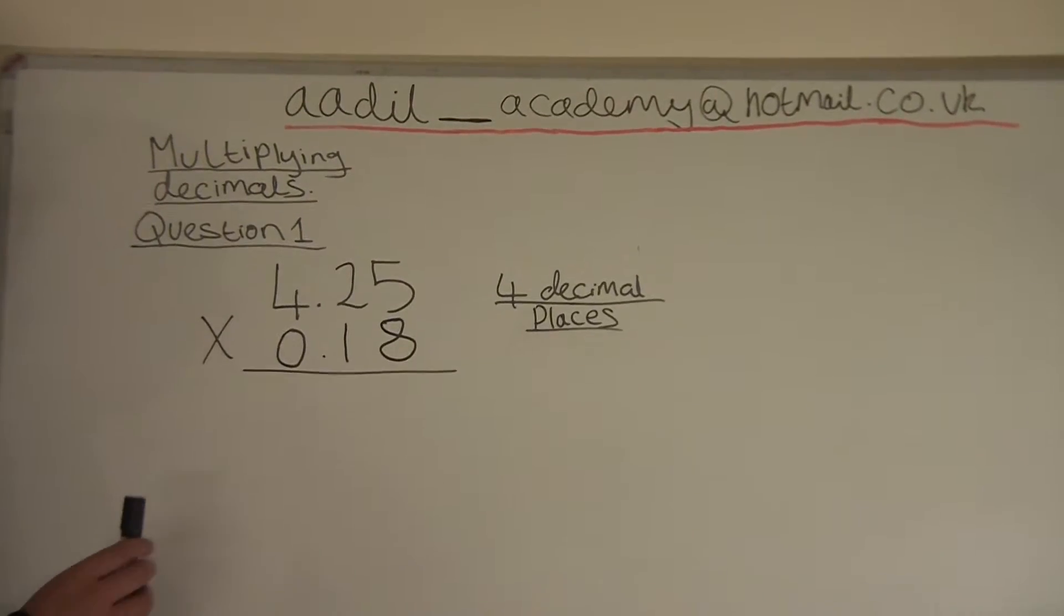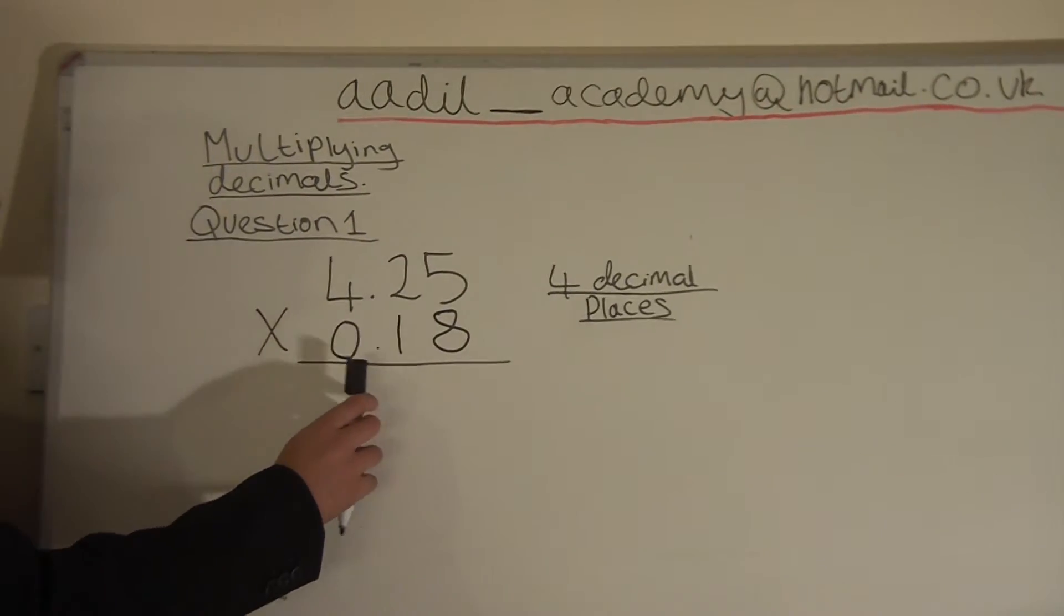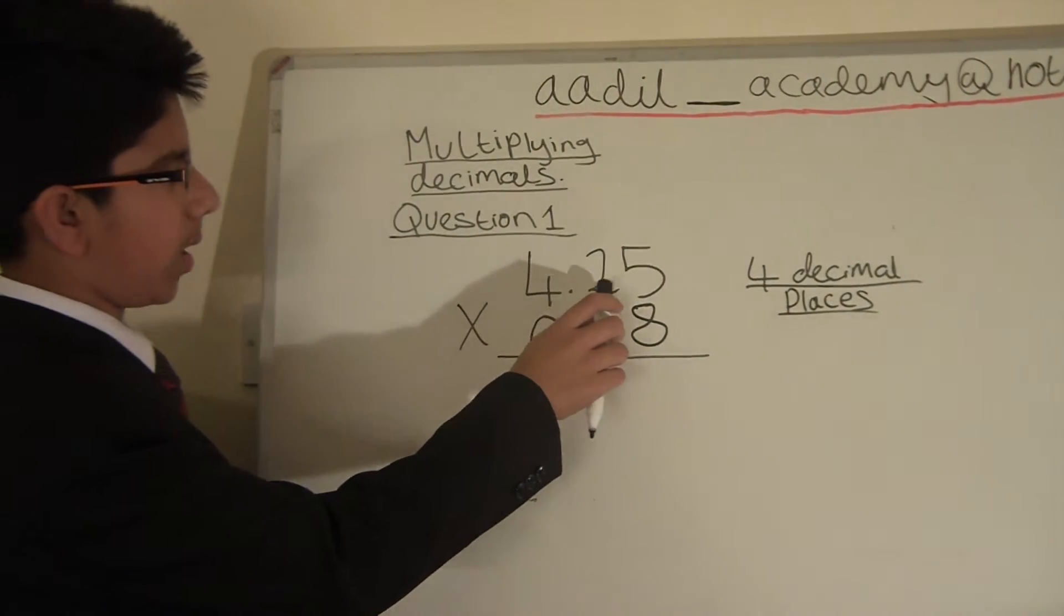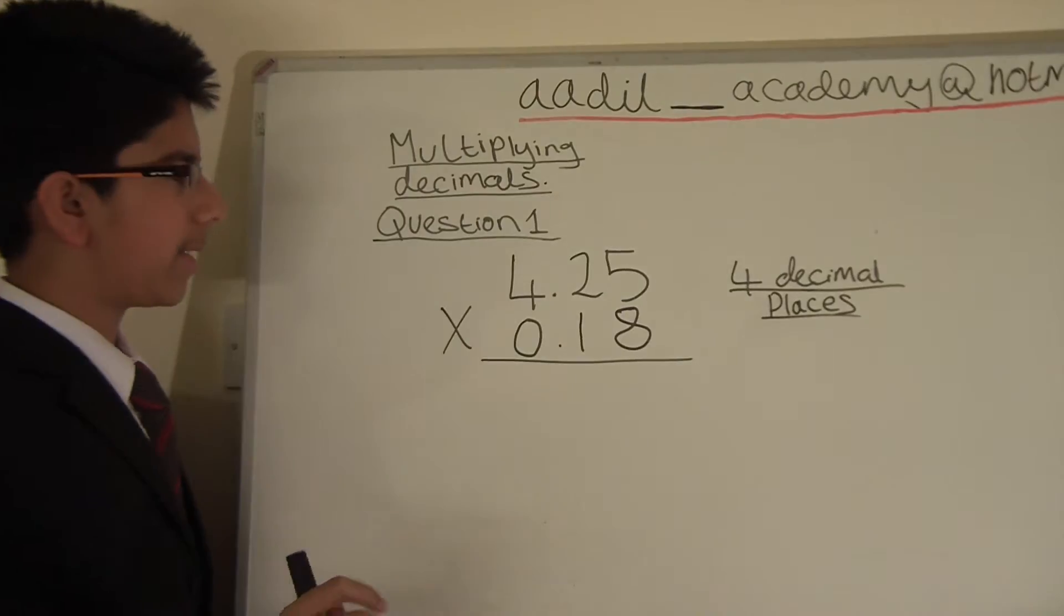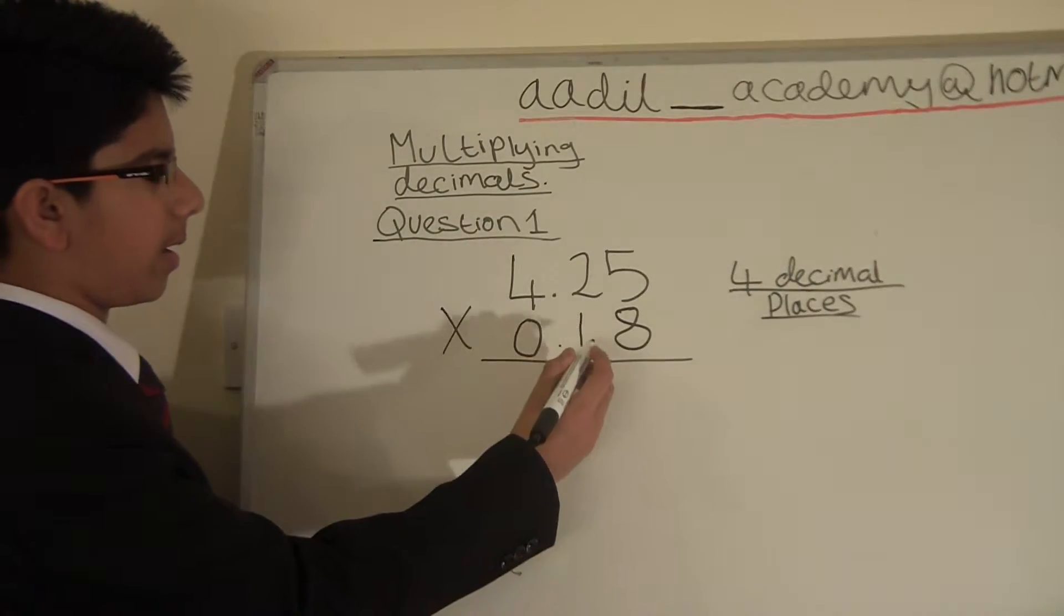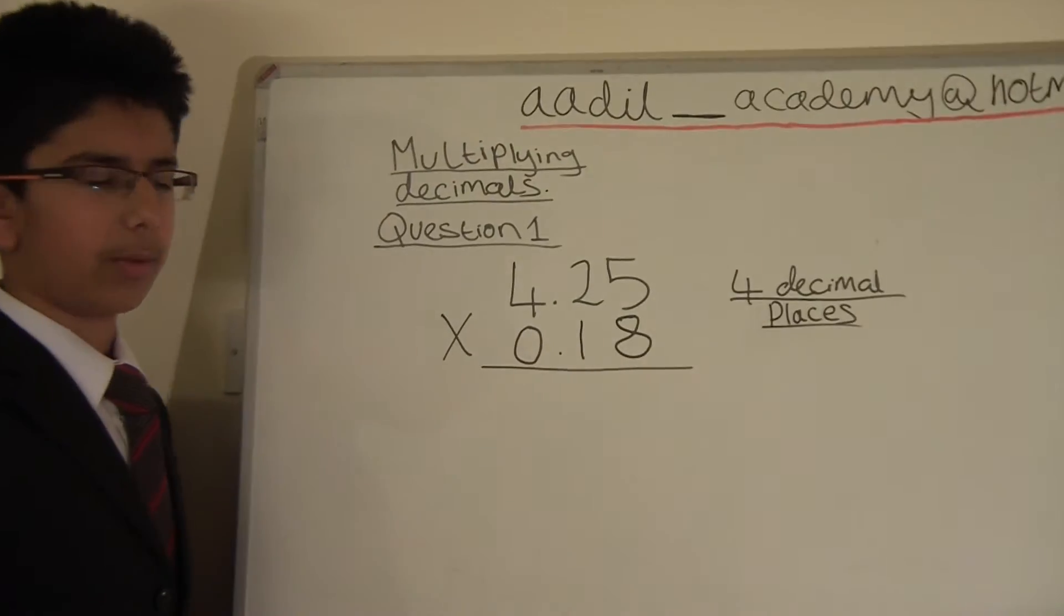First of all we have a look at how many decimal places each number has. So for the first one it has 1, 2, that's 2 decimal places and the bottom number has 1, 2, 2 decimal places.